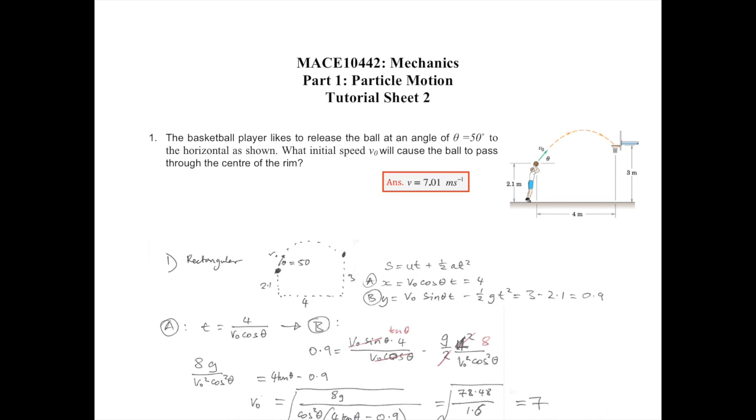Now, you know that for the initial velocity v0 it has to cover 4 meters in the x direction and 3 minus 2.1, so 0.9, has to actually go up 0.9 in the y direction.